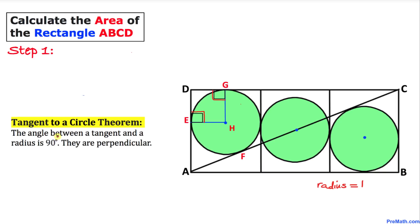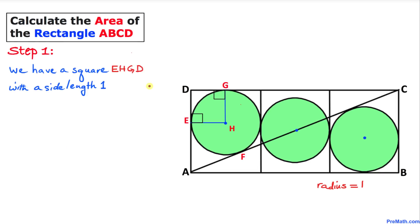These angles are right angles — 90 degrees — according to the tangent-to-a-circle theorem: the angle between a tangent and a radius is always 90 degrees, meaning they are perpendicular. Thus we get a square EHGD with side length one, because the radius is one unit, and since the square has all equal lengths, all sides are one unit.